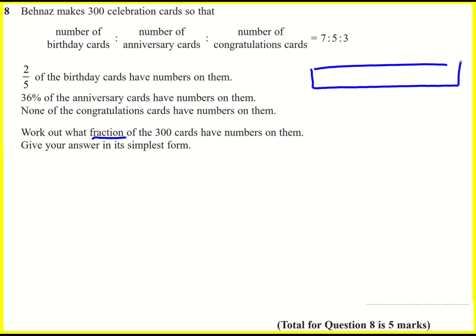Right, I'm gonna draw a bar model to start with. We've got seven to five to three. Not necessarily to scale here, but I'm just gonna say that this represents 300 cards. So I want to know what one part is. I've actually got 15 parts. I do 300 divided by 15, which is 20, to get one part.